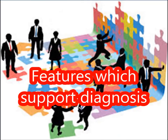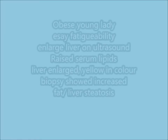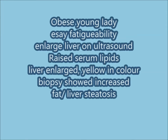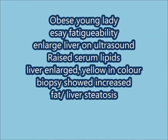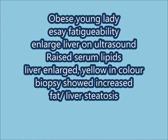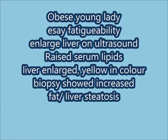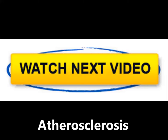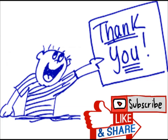The features which support the diagnosis of fatty liver are: the patient is an obese young lady with easy fatigability, enlarged liver on ultrasound, and raised serum lipids. The gross picture shows a liver that is enlarged and yellow in color, and biopsy showed fat globules confirming steatosis. The next video will be on atherosclerosis — deposition of cholesterol. Thank you for watching. Please subscribe to the channel, like, and share.